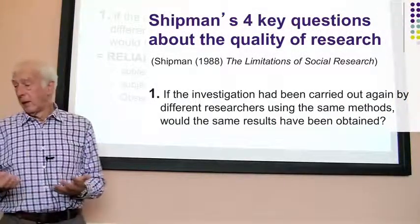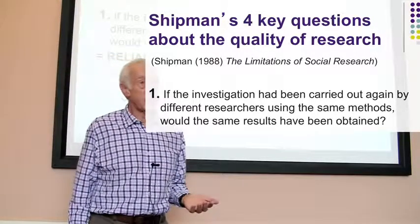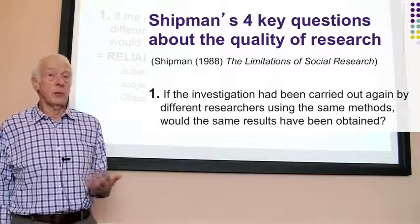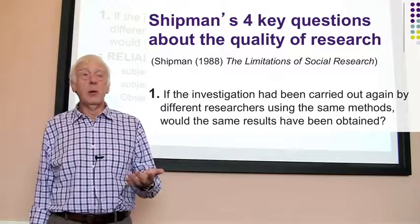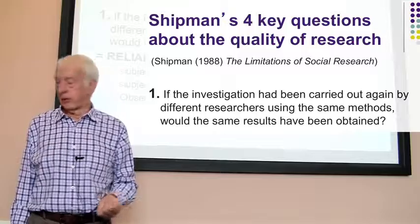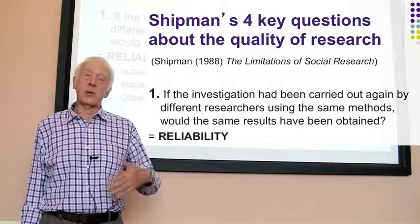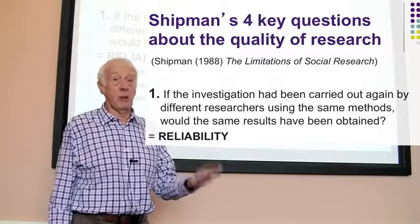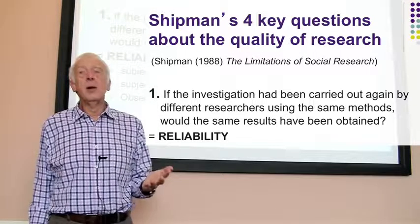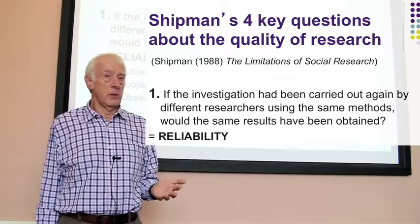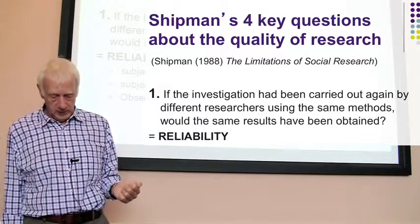The first question: if the investigation had been carried out again by different researchers using the same methods, would they have got the same results? That criterion is called reliability. If we repeat the research, do we reliably get the same answers? If something goes wrong and we don't, we say it's unreliable research.